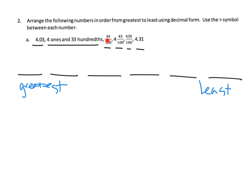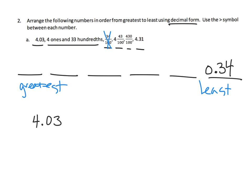Using logic, I see we have 34 hundredths — that's less than four. Then 4.03 — that's four ones, larger than four. We also have four ones and 4,300 — larger than four. And 430 over 100 is also larger than four. The only one not larger than four is 34 hundredths, so that goes as the least. We're asked to write in decimal form, so that's what we'll do. Now let's convert each number to decimal form. 4.03 is already done.